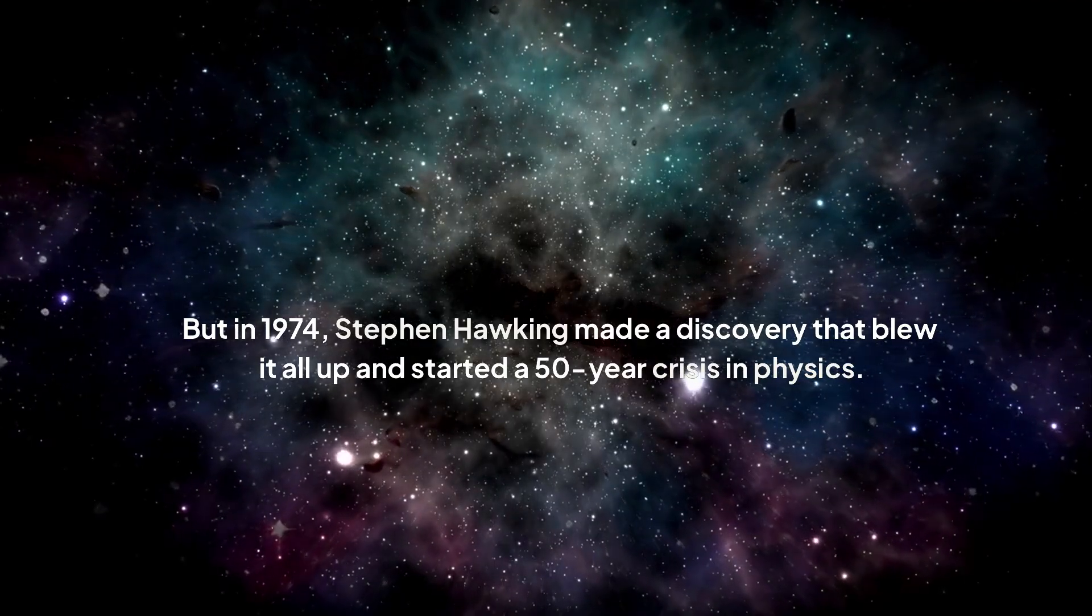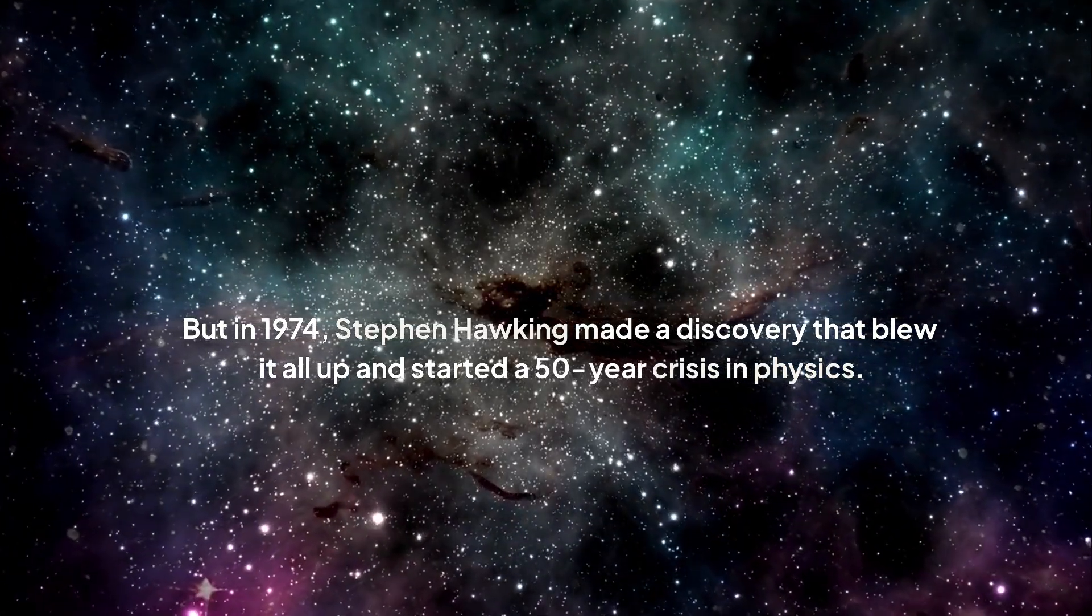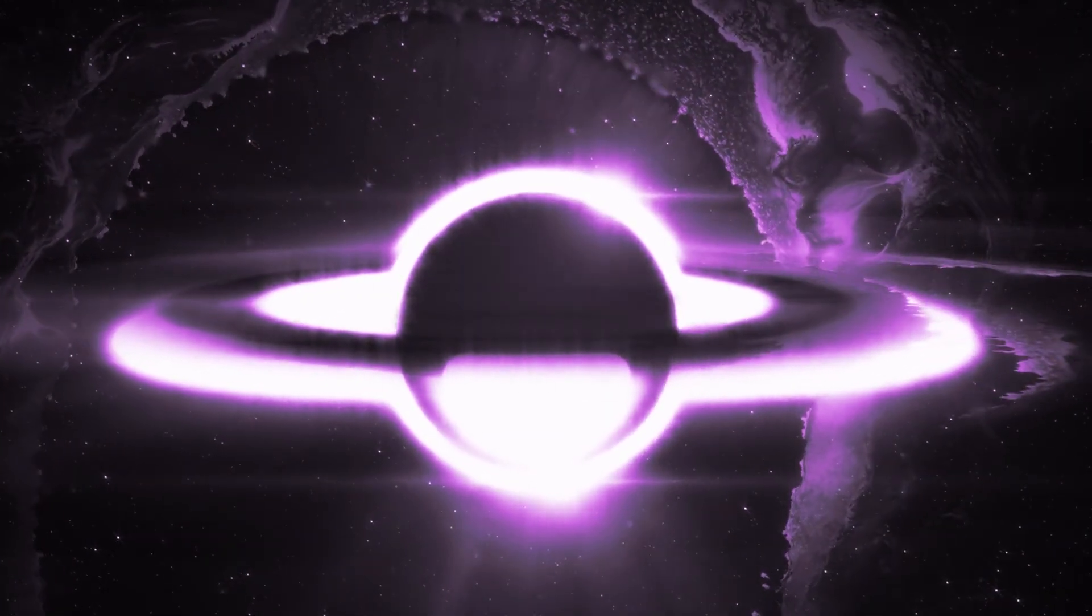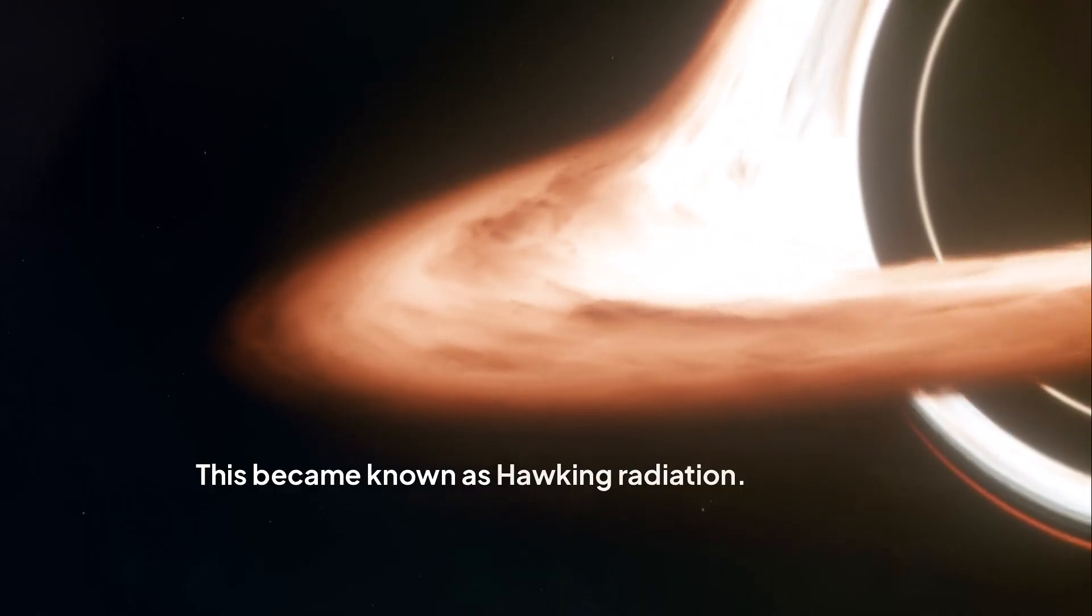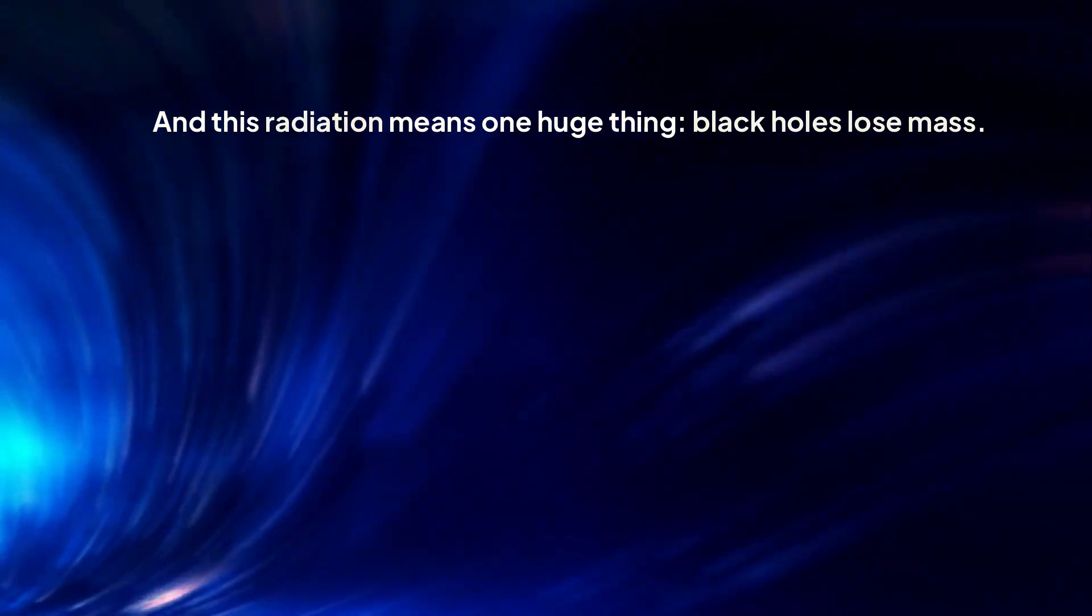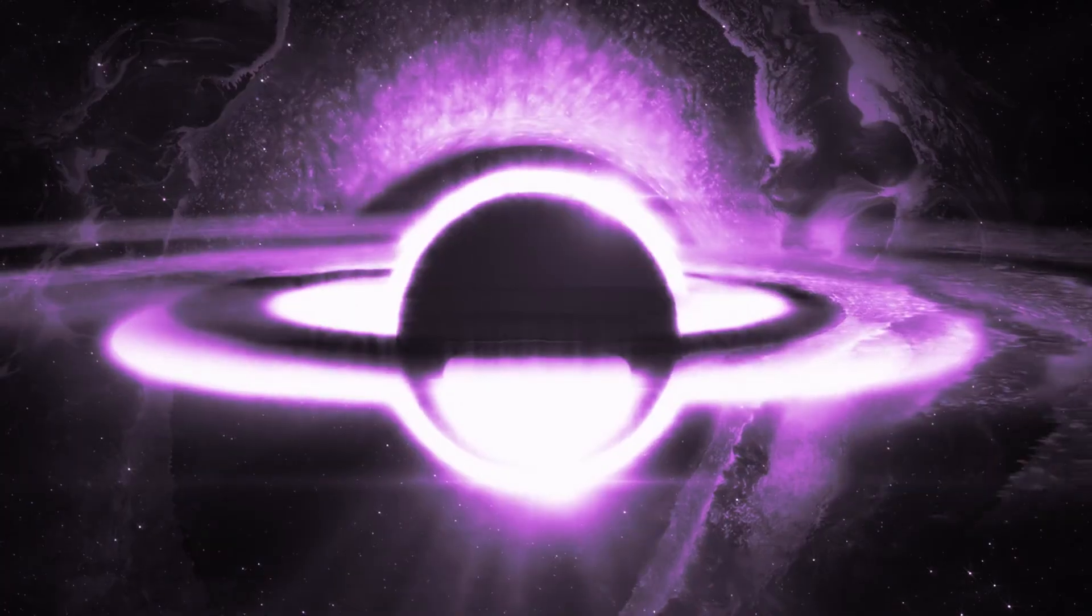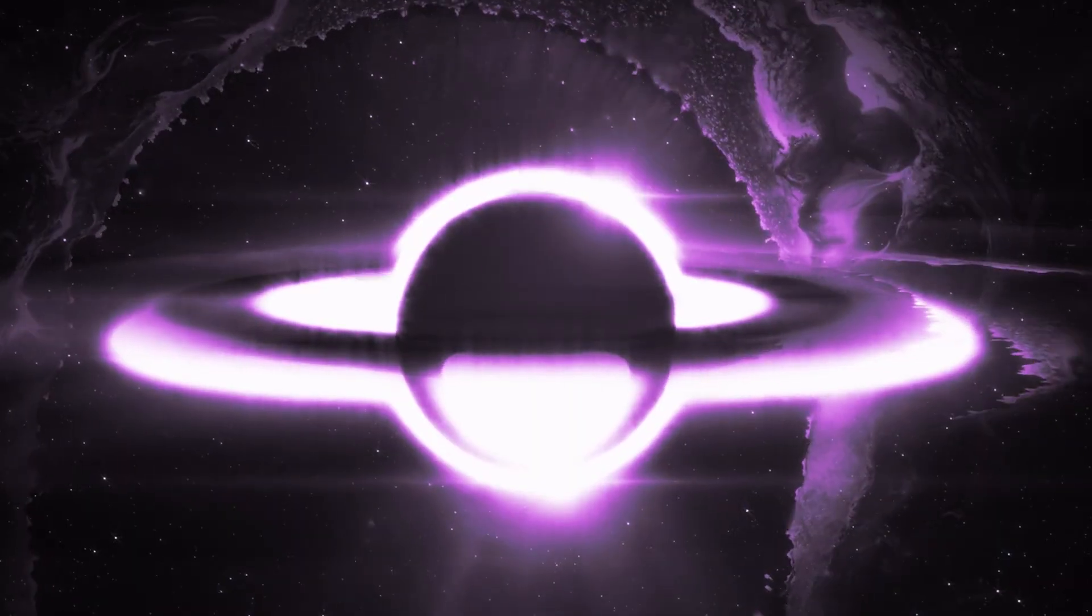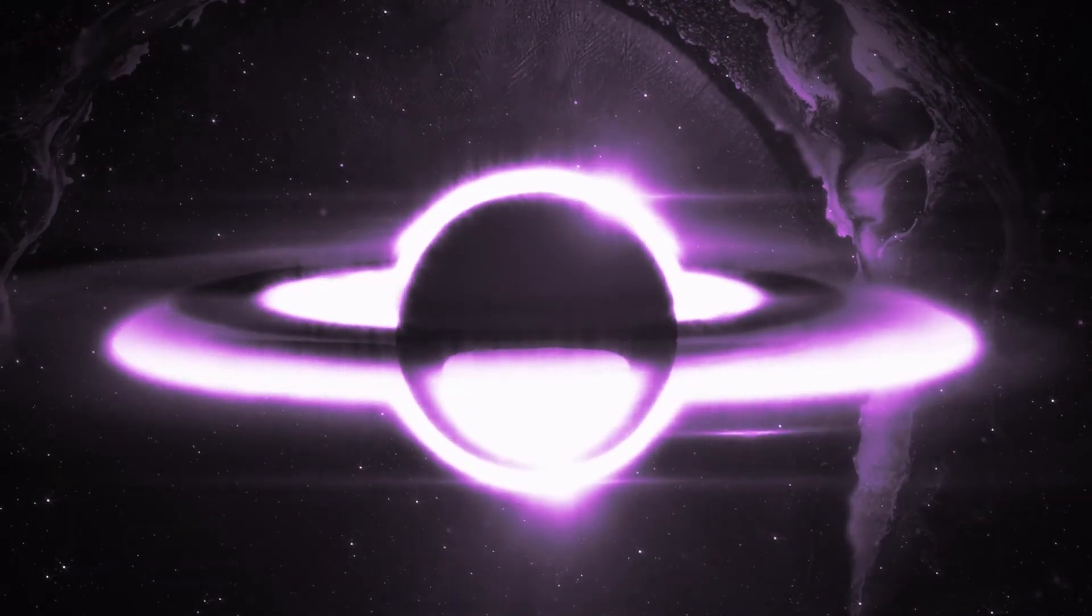But in 1974, Stephen Hawking made a discovery that blew it all up and started a 50-year crisis in physics. Hawking, using some seriously weird quantum mechanics, found that black holes aren't completely black. They glow. Quantum effects at the very edge of the event horizon cause them to spit out a steady stream of particles. This became known as Hawking radiation. And this radiation means one huge thing. Black holes lose mass. And if they lose mass, they shrink. Over an insane amount of time, trillions and trillions of years, this slow leak will make a black hole completely evaporate, disappearing in a final poof of energy.